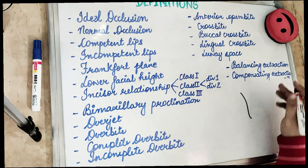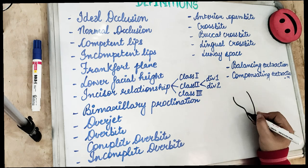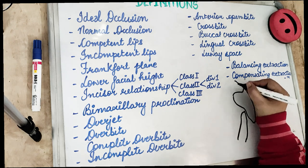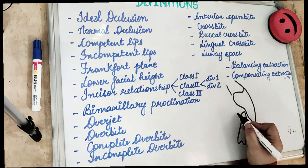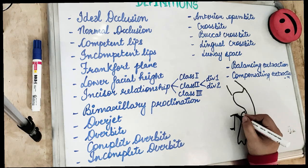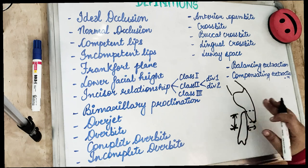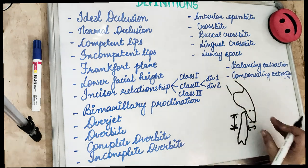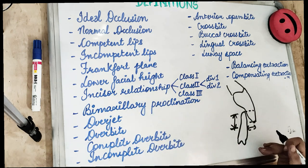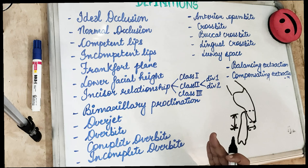Overjet is the horizontal overlap — the distance between the upper and lower incisors in a horizontal plane. Overbite is the vertical overlap of the incisors in a vertical plane. Looking at a diagram of the upper and lower central incisors: the horizontal overlap is the overjet, and the vertical overlap is the overbite.